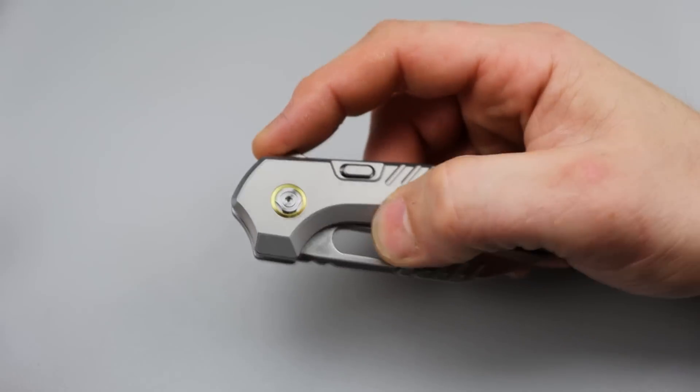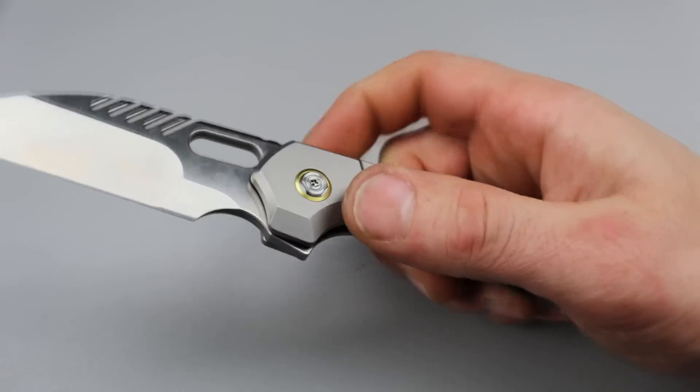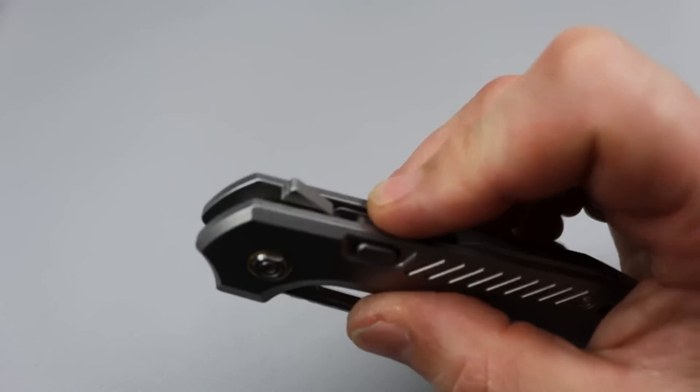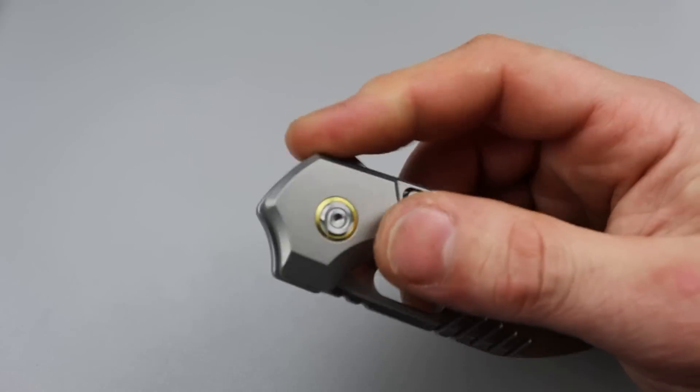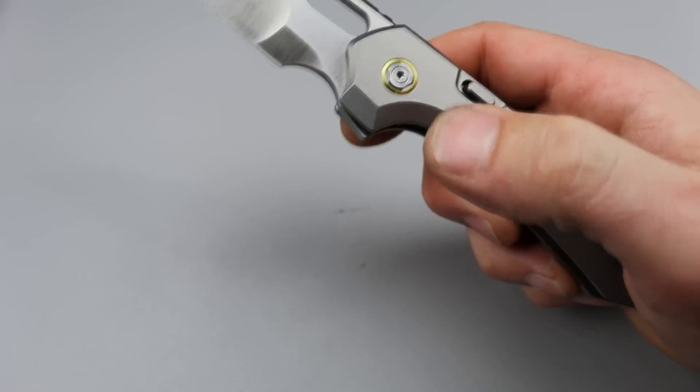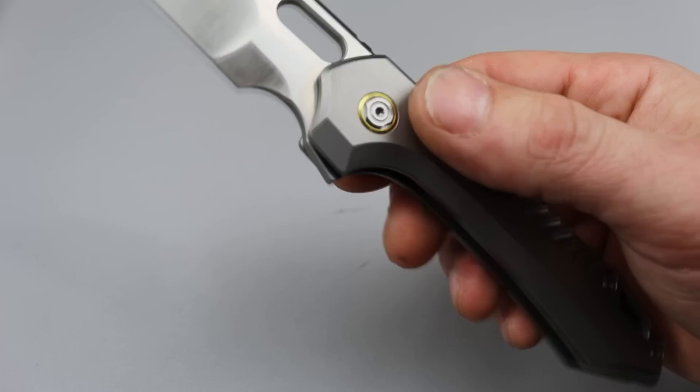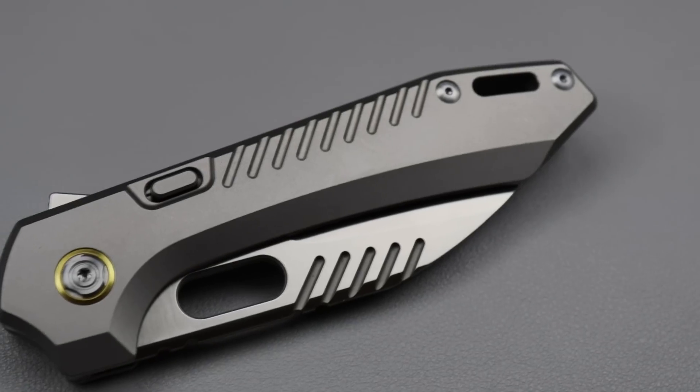Then the detent, because it's not a regular plunge lock or button lock, since it is on a regular detent, this flipper tab is tuned to perfection. When you break that detent, you feel that thing snap out with authority. And then that button, nice, easy access, and very, very well placed.